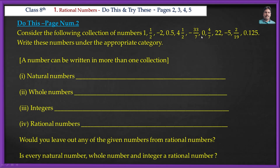Here we have some numbers and appropriate categories — 4 categories in total, with structure in each. Natural numbers: from the given numbers, 1 and 22 are natural numbers.